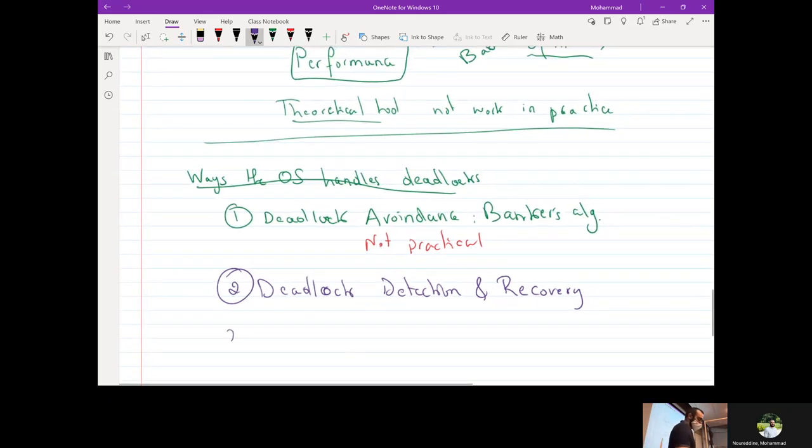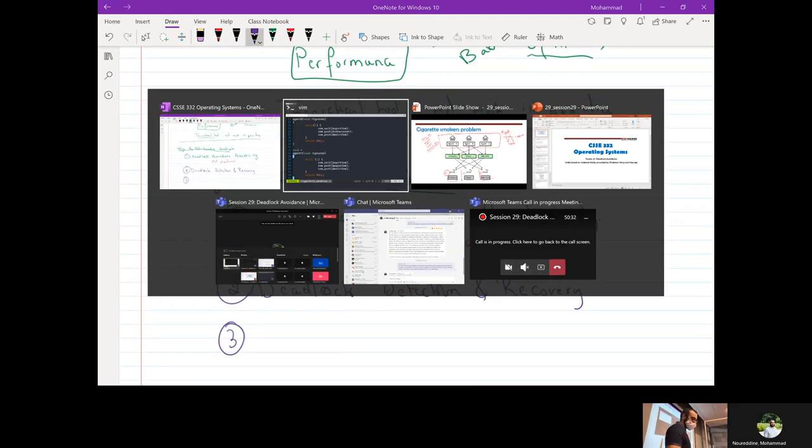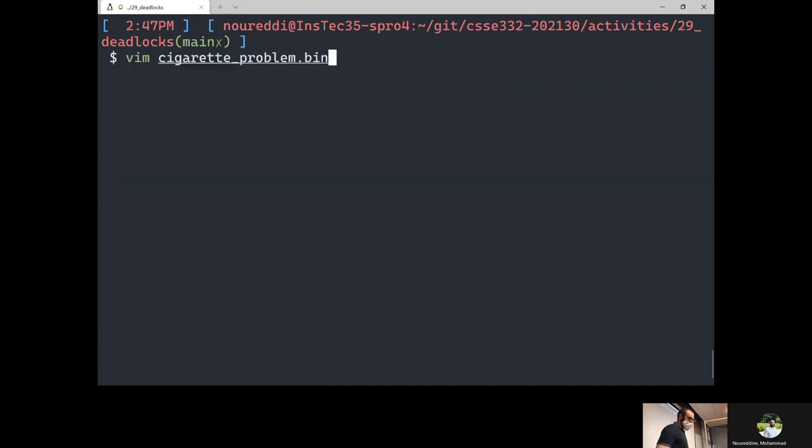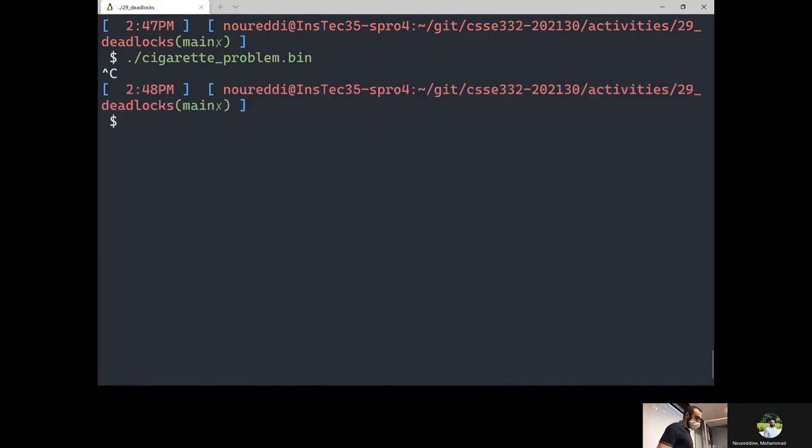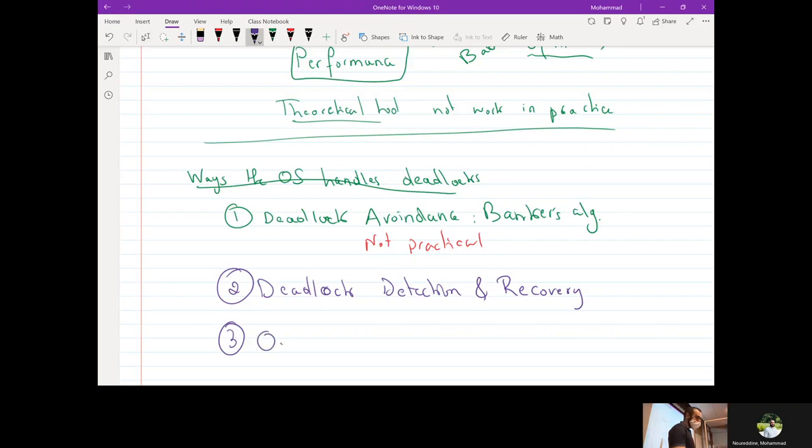So there is one third approach, which is the approach taken by most operating systems today. So let's see what it is. If I run this and there's a deadlock, what is Linux doing? What's Linux gonna do about it? If I leave this running till tomorrow's class and I come back in, would anything change? Nope, right?